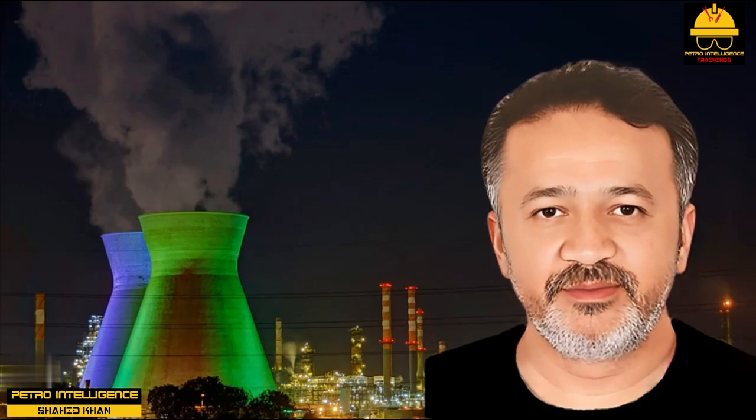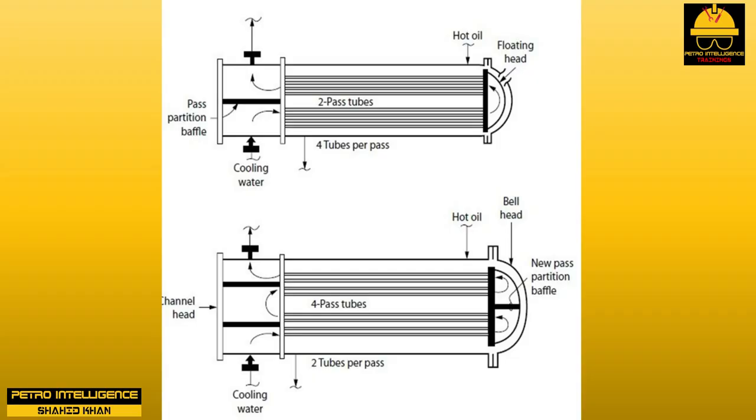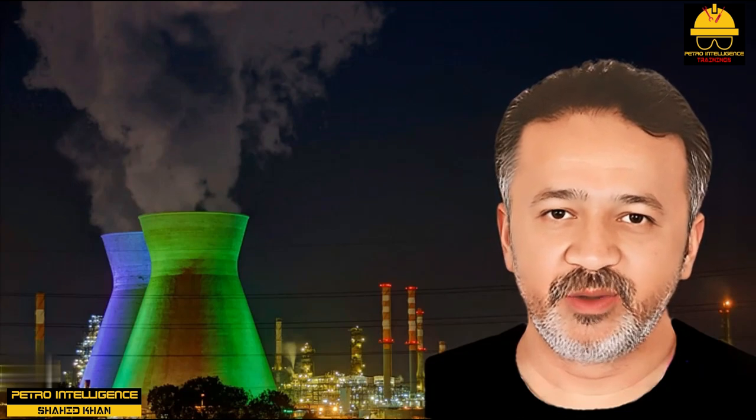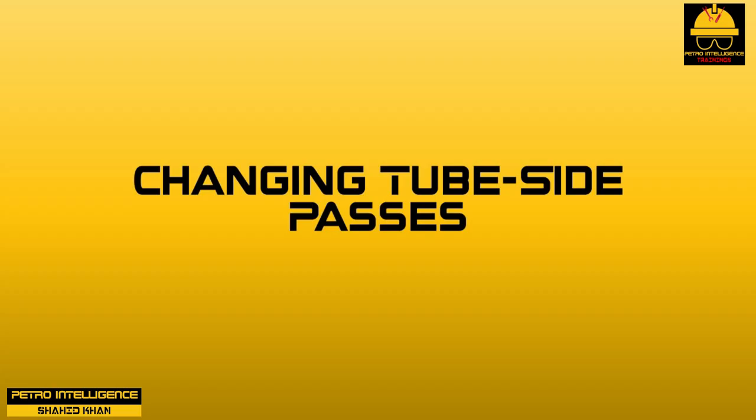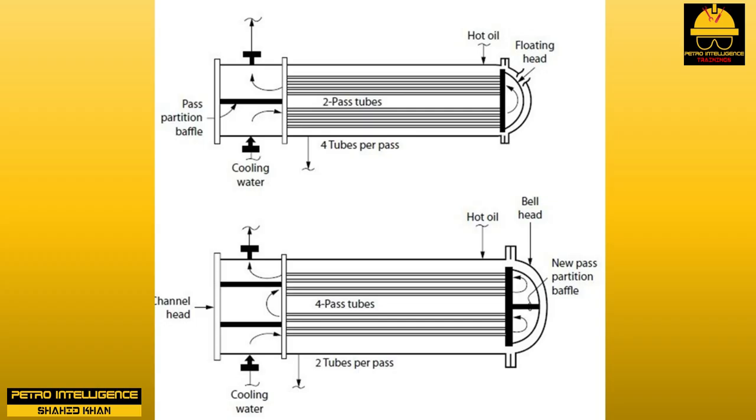One mistake I have made in the past is due to air accumulation in the channel head — I confused the effect of trapped air with fouling. Especially on startup, air may be trapped both above and below the pass partition baffles. The air can fill some of the tubes, especially at lower tube velocities, and effectively reduce the exchanger surface area. Opening the vents on the channel head to vent out accumulated air is a good method to restore lost cooling capacity. Initially I had confused this lost cooling capacity with fouling.